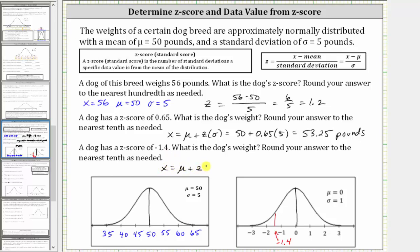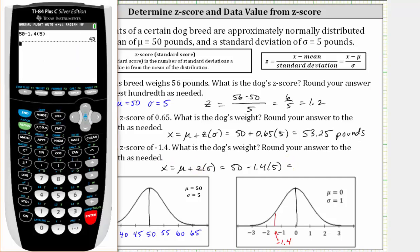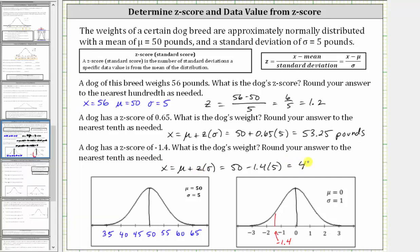In our case, that is 50 plus negative 1.4 times five, which we can write as 50 minus 1.4 times five — minus because the z-score is negative — which equals 43 pounds. The weight of 43 pounds on the normal distribution is approximately here. I hope you found this helpful.